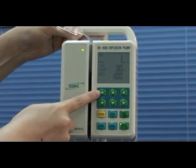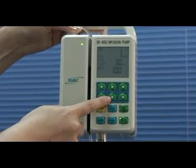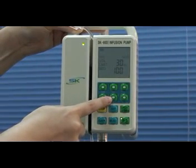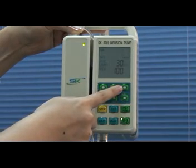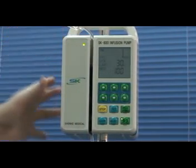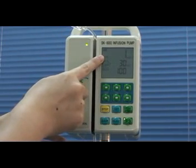If you press up 100 key, the value will increase by 100. If you press down 10 key, the number will decrease by 10. If you press up 1 key, the value will increase by 1. Now we change the flow rate into 250.